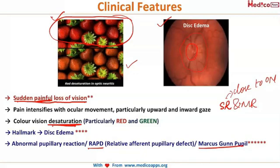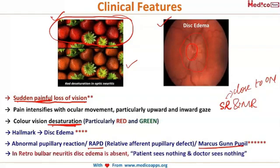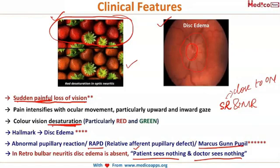Another classic and exam-relevant feature is RAPD — relative afferent pupillary defect, also known as Marcus Gunn pupil. In retrobulbar neuritis specifically, it is famously said that 'the patient sees nothing and the doctor sees nothing.' The patient's vision is deteriorated, but because the inflammation is behind the eyeball, fundoscopic examination appears completely normal with no positive signs.